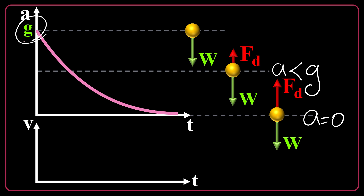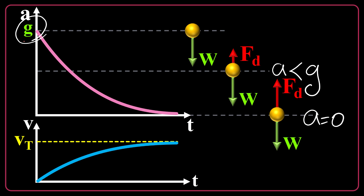The velocity-time graph has a reverse shape. At the beginning there is no speed, but the object speeds up to vt. At terminal speed, velocity is maximum and acceleration is zero. As you know, acceleration is the slope of the v-t graph, so the slope is high at first, then less and less, and finally zero. When the object reaches terminal speed, it has no acceleration and maximum speed, and afterward it moves at constant velocity.